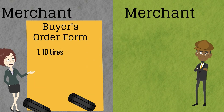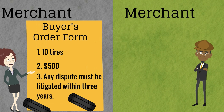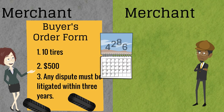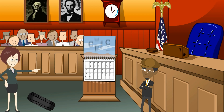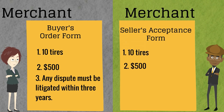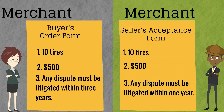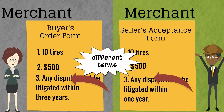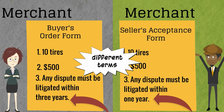But now let's say we have two merchants and a buyer decides to order some tires. She orders 10 tires for $500, and she has a provision stating that any dispute must be litigated within three years — in other words, if a party discovered a problem in connection with the contract in 2015, she would have until 2018 to commence the lawsuit. The seller states that he accepts the offer, but his acceptance form says, 'Sure, 10 tires for $500, but any litigation must be brought within one year.'